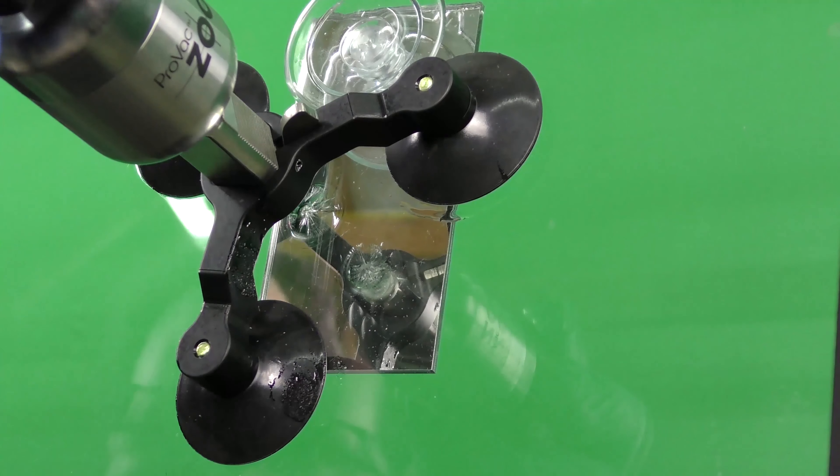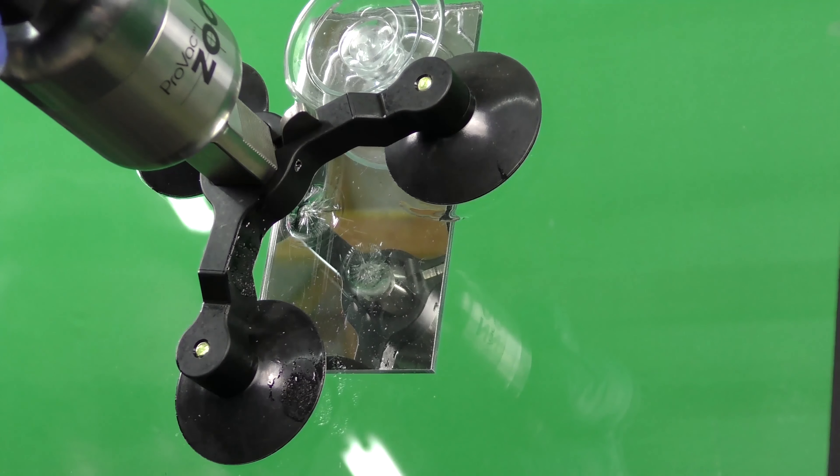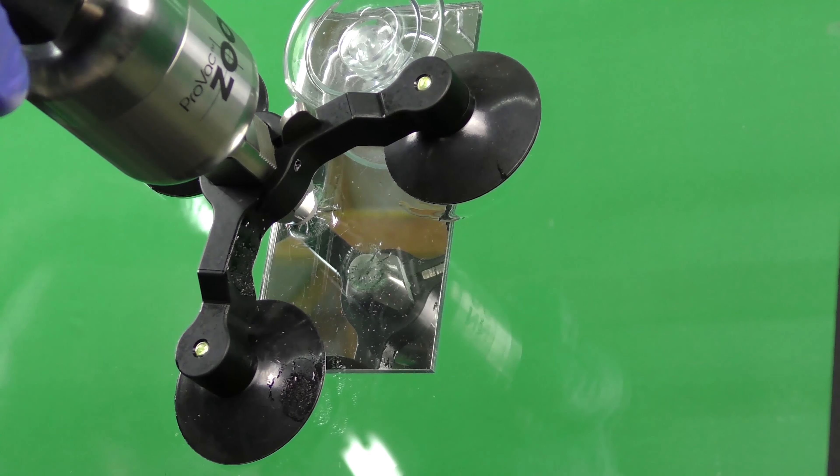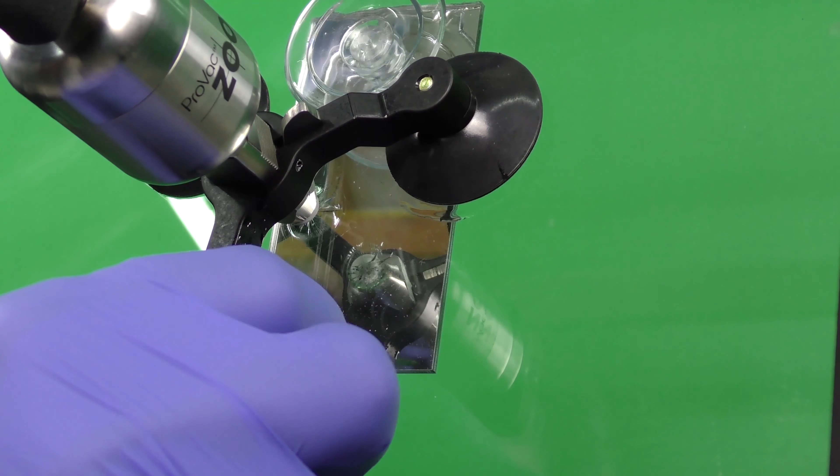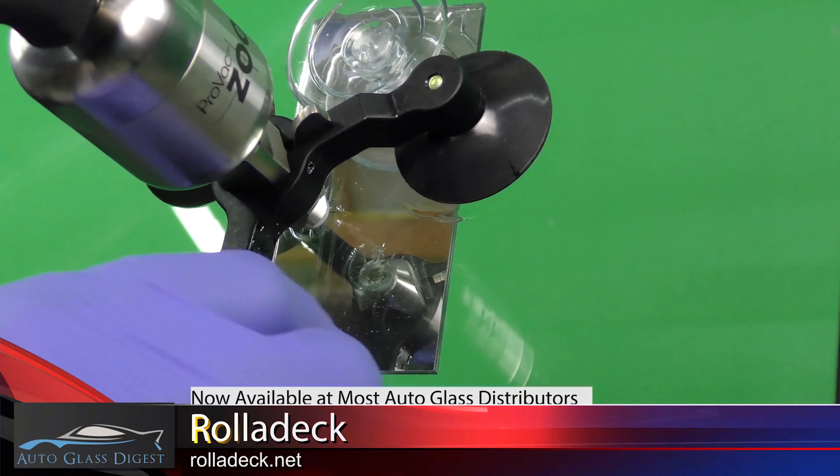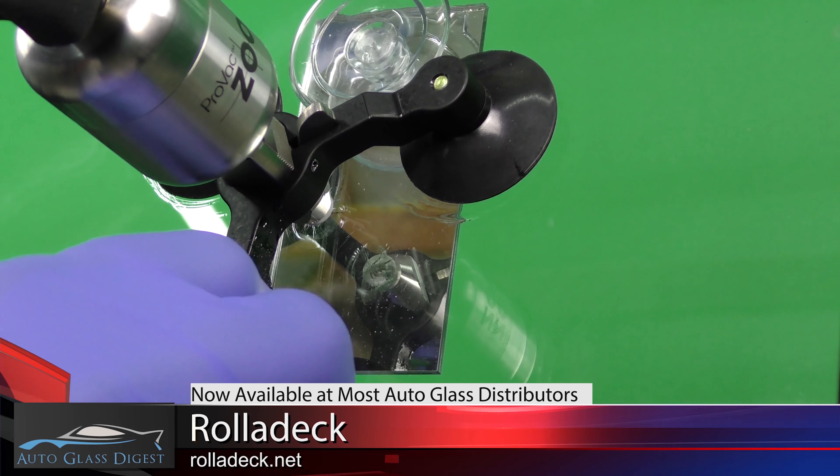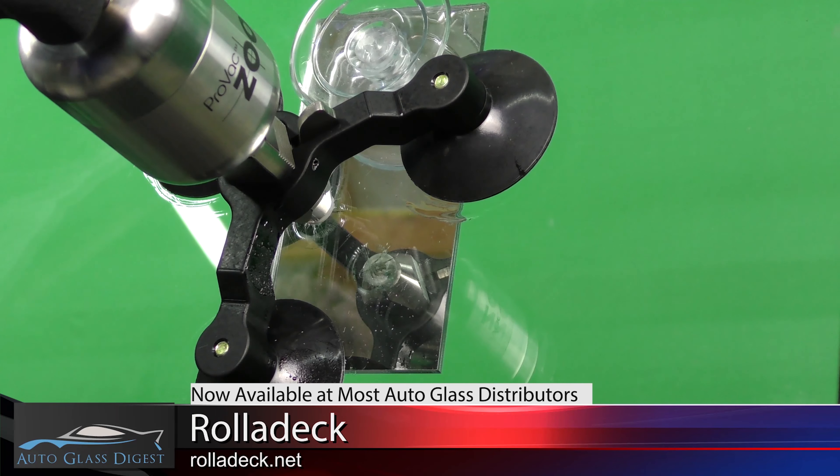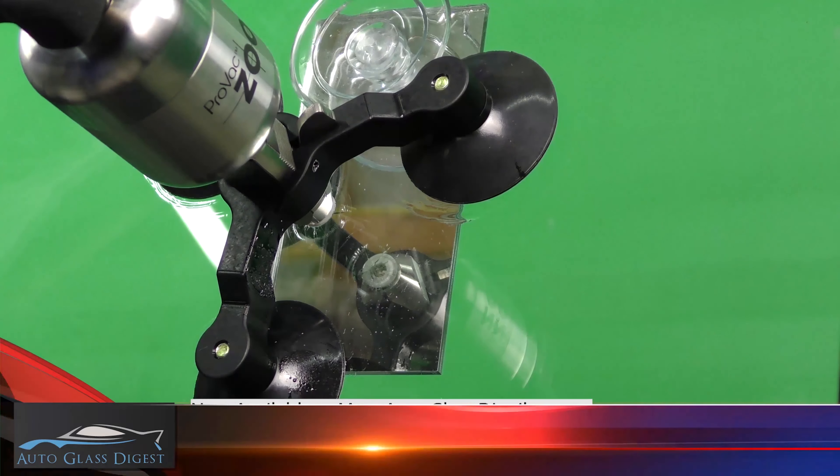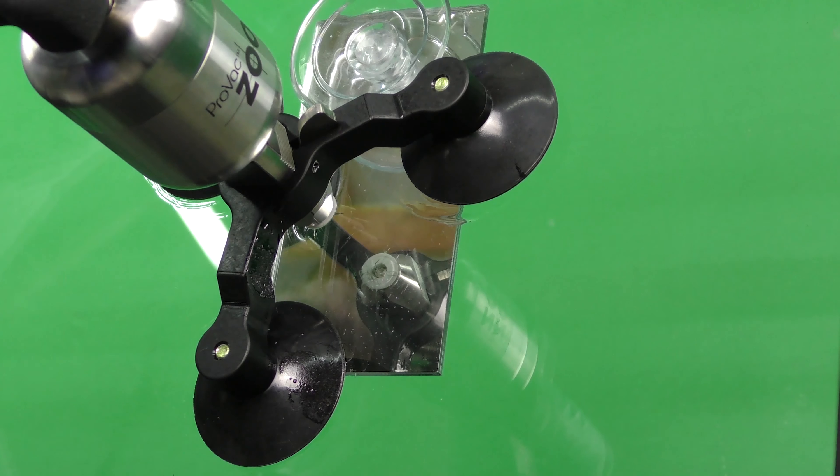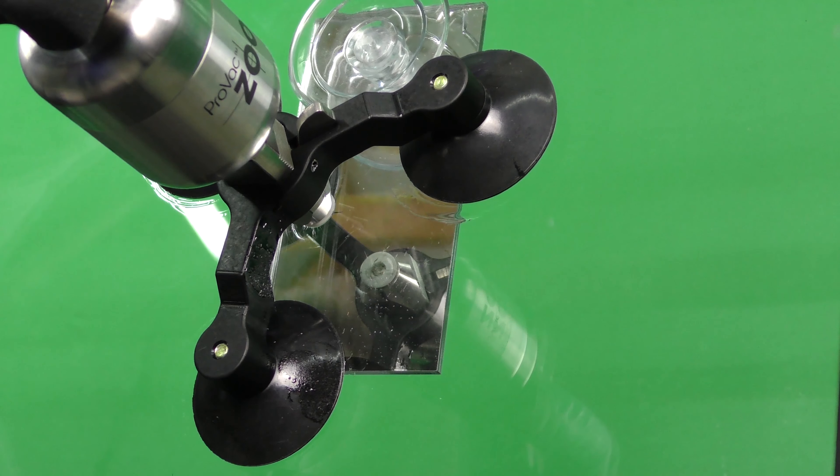Insert the injector with the teeth side aligned to the ratcheting side on the bridge. Line it up directly over the impact area and then give the injector a push until it clicks one or two times once the seal has made contact with the glass.